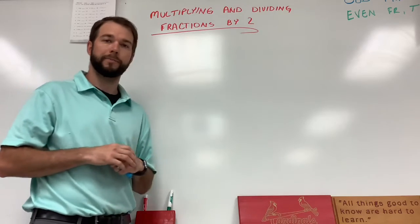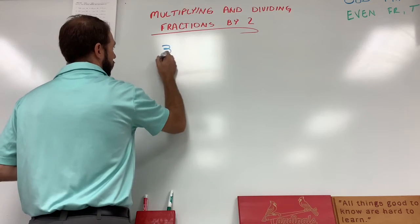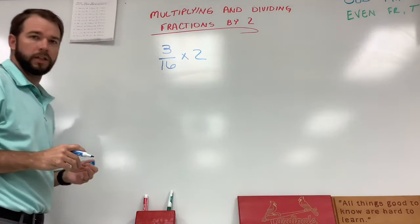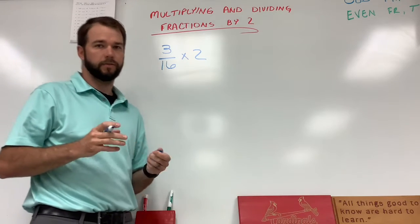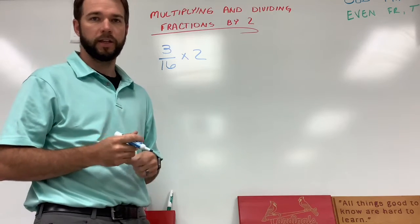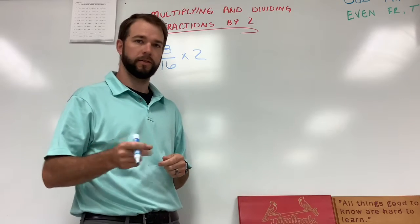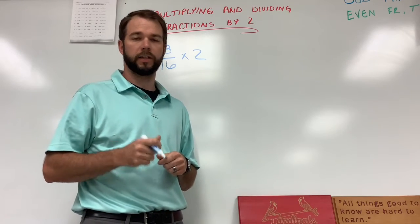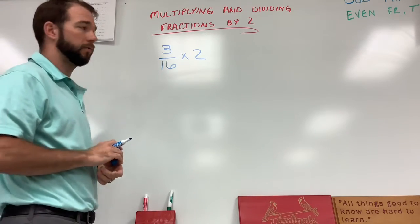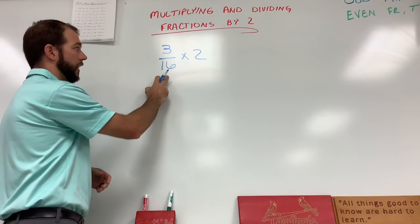First let's start by multiplying some fractions by two. Let's start off with three sixteenths times two. Now there are some shortcuts here, and that's the way I'm going to teach you, because when we go into the shop you want to be able to do these things very quickly. You have a measurement, you've got to use a machine, somebody's waiting in line behind you — you need to be able to do this stuff very quickly in your head. So if we have three sixteenths times two, we're just going to take that bottom number and cut it in half.